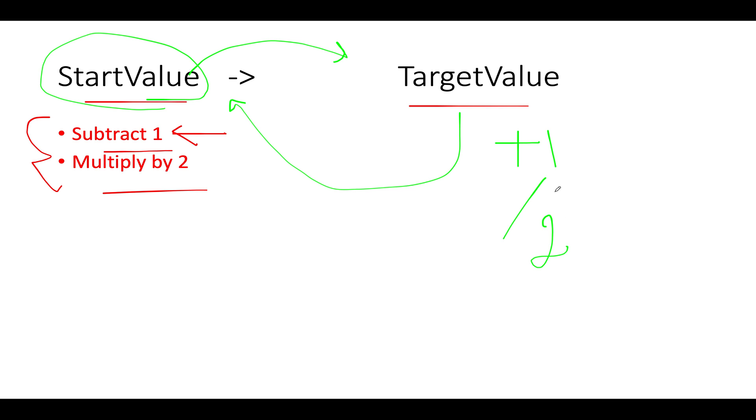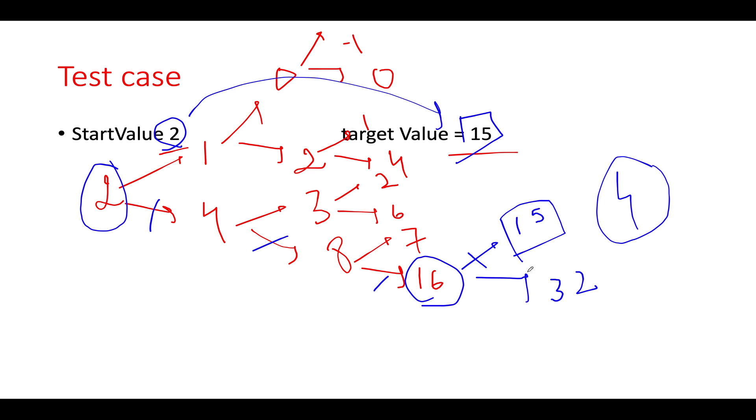Why I am saying this that we should go with the division operation? The answer is simple because when you see that the target value is even in nature, you should always go for the division kind of operation. Because it will help you eliminate the other possibility of the entire tree where you are subtracting or adding one to it.